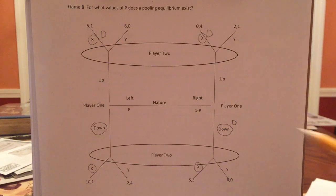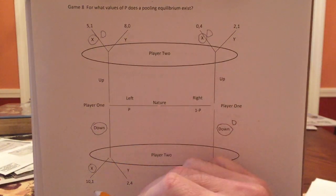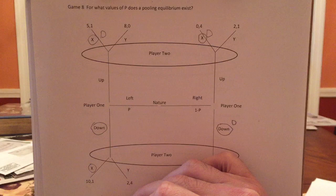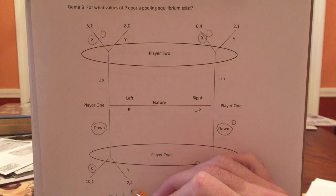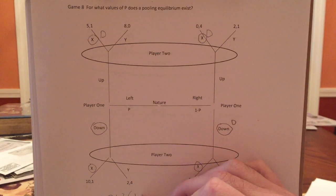So if you play X, you're player two, down is played, you play X, you get one with probability P, and you get three with probability one minus P.